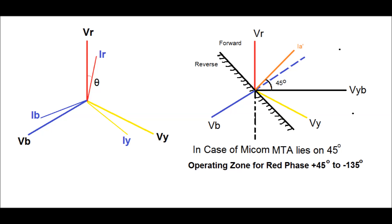Now, for the MICOM relay, the maximum torque angle lies at 45 degrees. That is, the fault current IA' at R phase will be leading the reference voltage phasor VYB. Therefore, the operating region for red phase fault will be from plus 45 degrees to minus 45 degrees. Beyond this operating region, the relay will not sense the fault current.